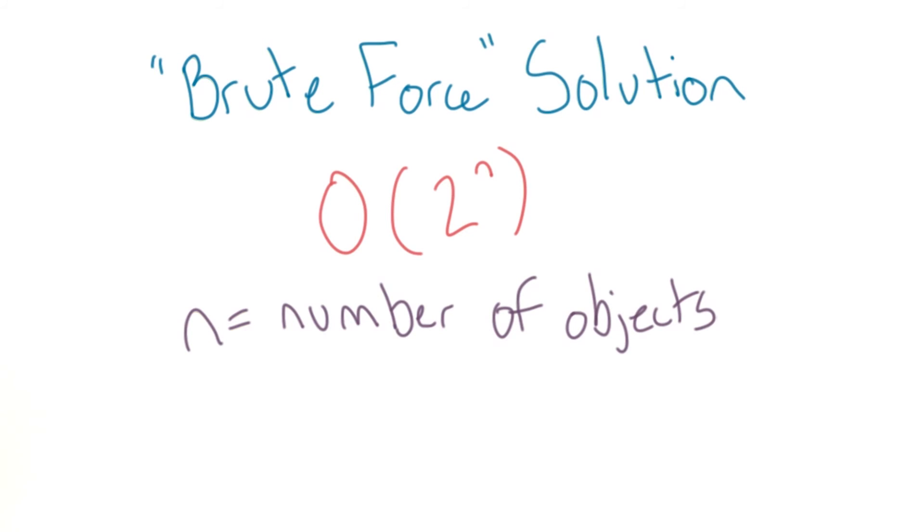There's a precise mathematical reason for this, but you could also think of one combination as a string of length n, where each spot has a 1 if it's in the knapsack or a 0 if it's left out. That means this is an exponential time algorithm.